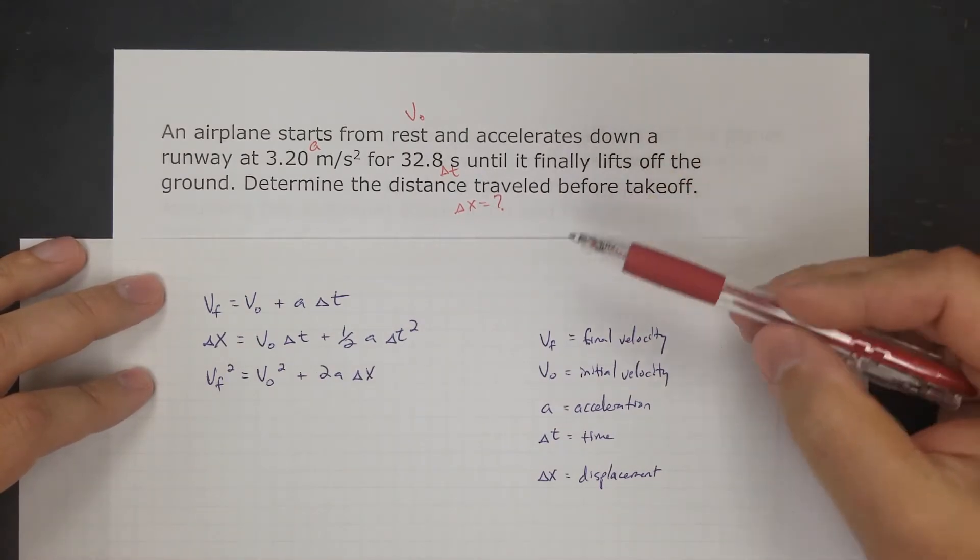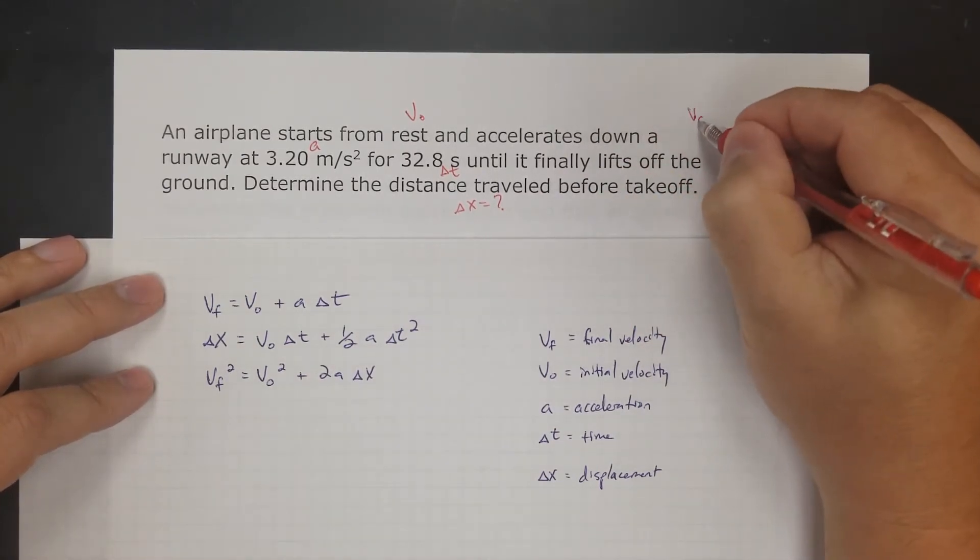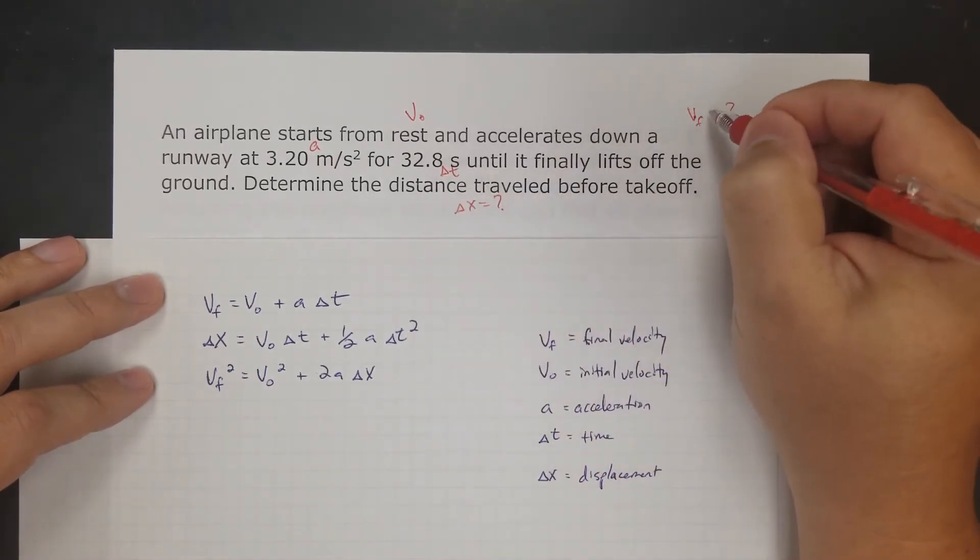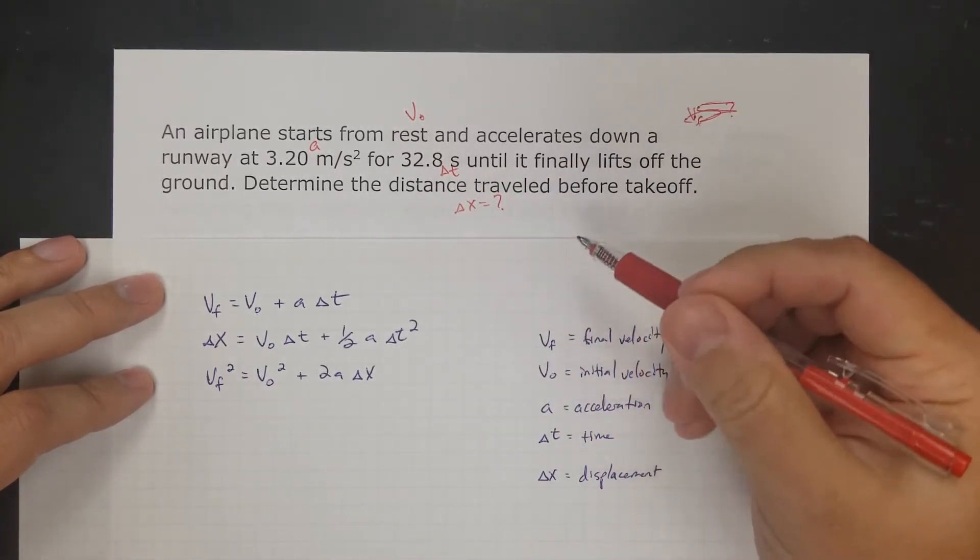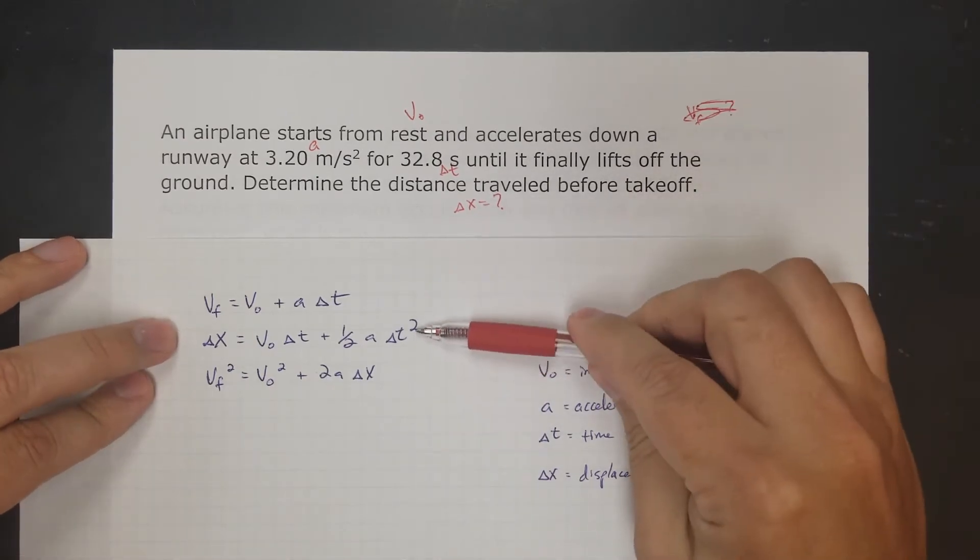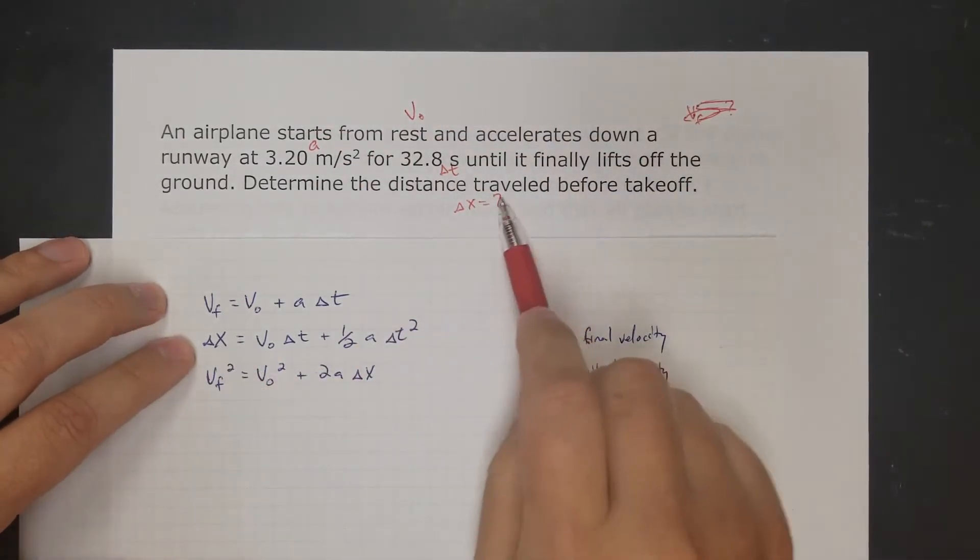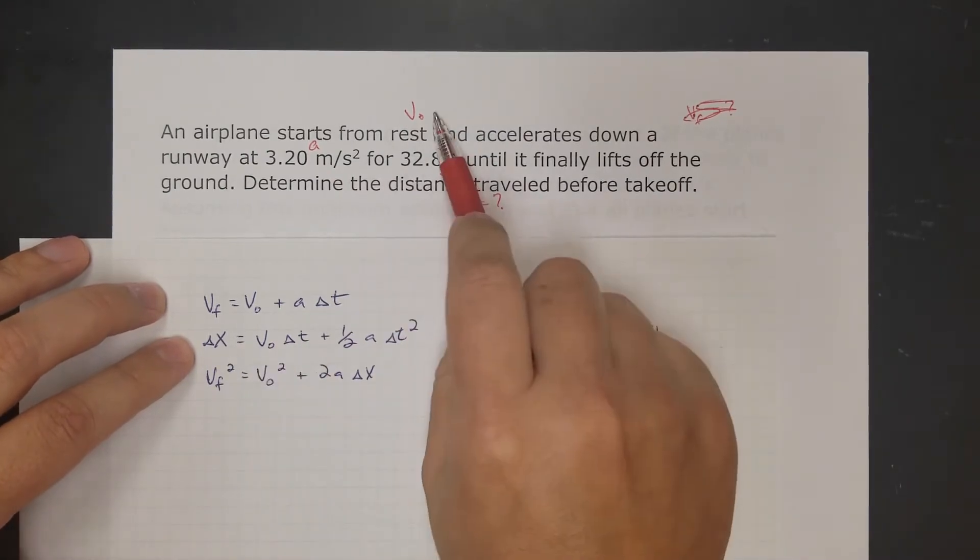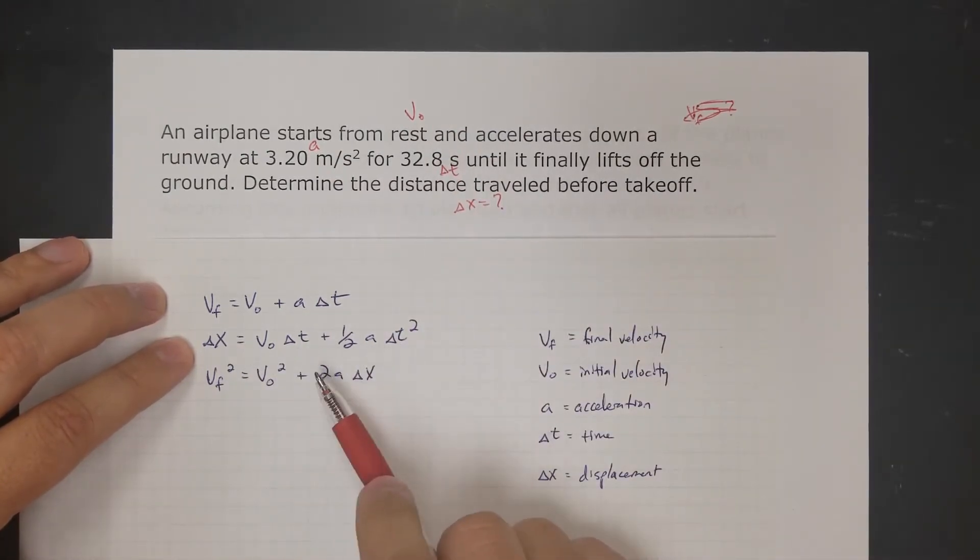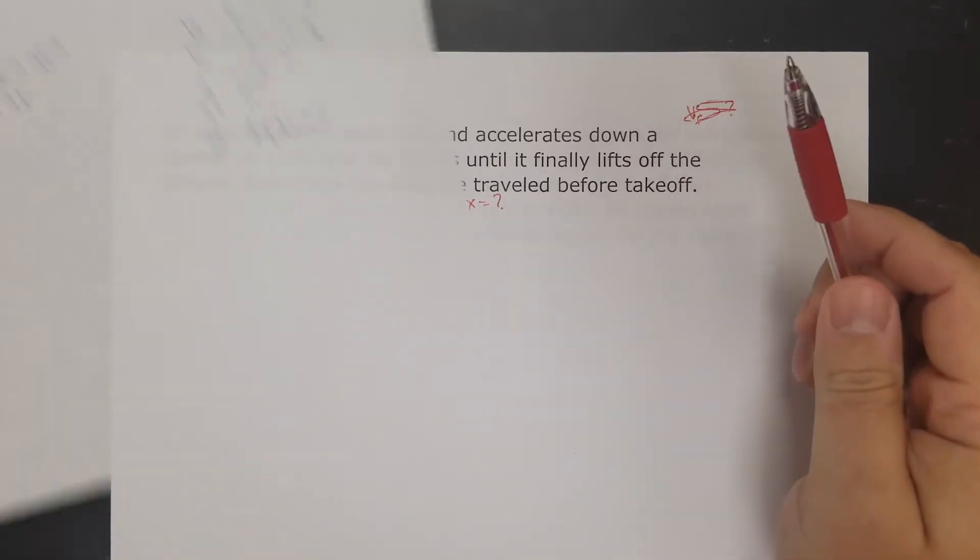What do I know? Notice I don't know final velocity either. It doesn't tell me, so I need an equation that doesn't have final velocity. It's going to be this one. If you look at these, you have all the variables here. I have displacement, that's what I need. Initial velocity I know is zero, time, acceleration, time. So we're going to use this one.